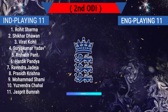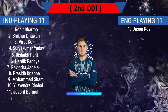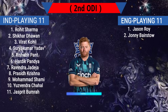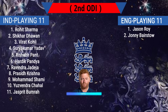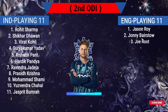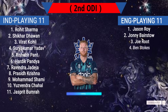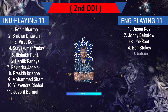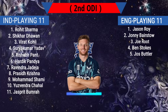Team England playing 11. Number 1: Jason Roy. Number 2: Jonny Bairstow. Number 3: Joe Root. Number 4: Ben Stokes. Number 5: Jos Buttler.